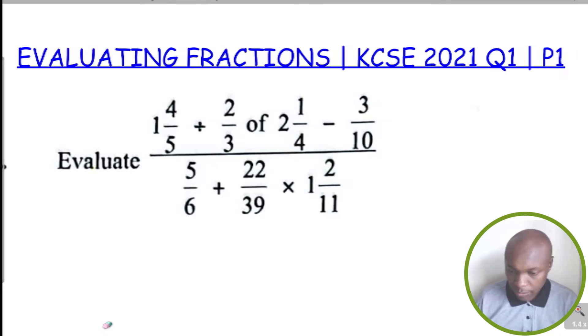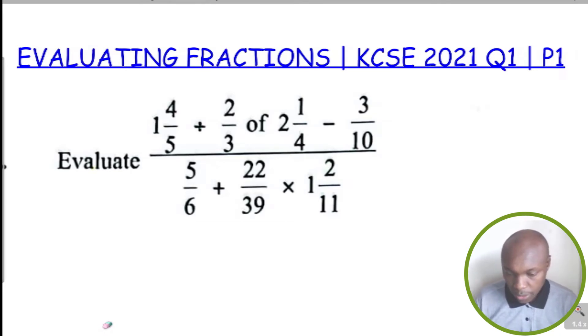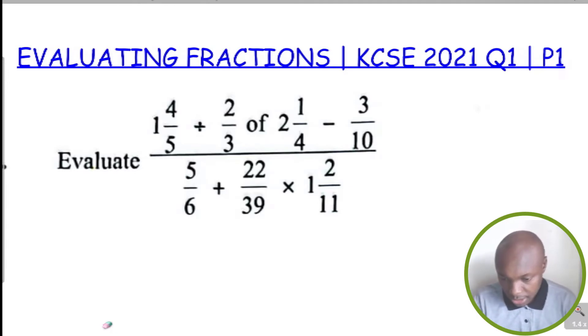Evaluate 1 and 4 over 5 divided by 2 thirds of 2 and a quarter, subtract 3 over 10, everything divided by 5 over 6 plus 22 over 39 multiplied by 1 and 2 over 11.